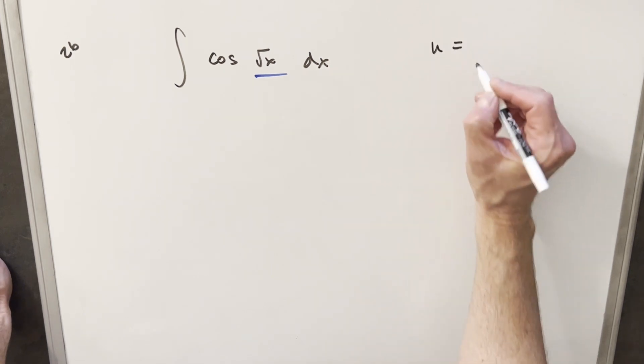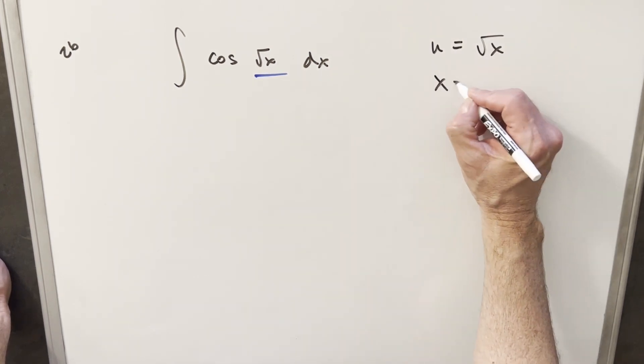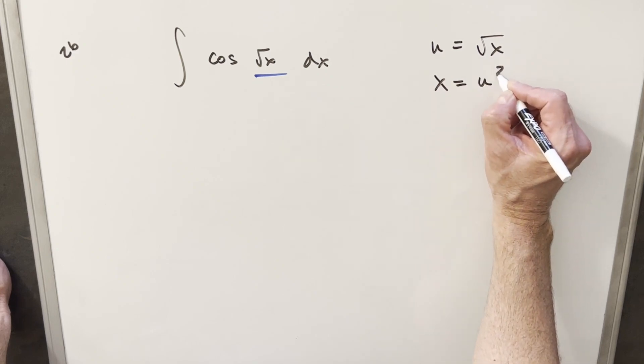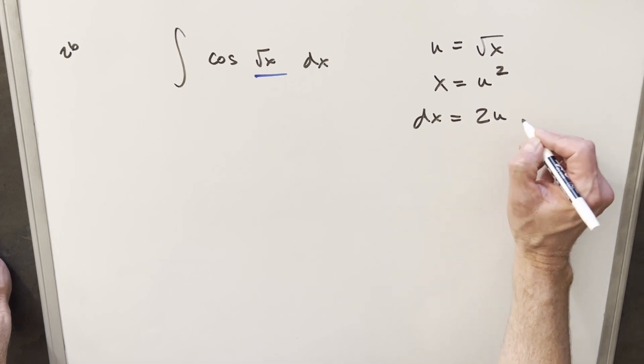So I'm just going to take care of that right away with a u substitution. I'm going to call my u equal to square root of x. Then solving for x, we find x is u squared. I'll take my derivative, get dx, and that's just going to be 2u du.